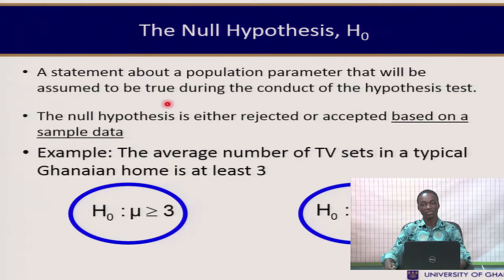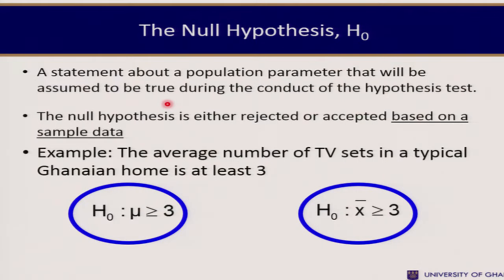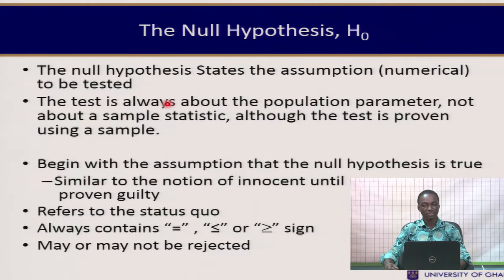In formulating the null hypothesis, for example, if the average number of TV sets in a typical Ghanaian home is at least 3, then it is formulated as H₀: μ ≥ 3. Every time, our hypothesis is based on the population parameter and not the sample statistic. The null hypothesis states the assumption to be tested and is always about the population parameter.